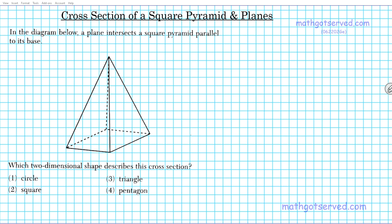The cross section is basically referring to the intersection between the pyramid and the plane. If you take a look at that intersection — the outline of the intersection — what kind of two-dimensional shape is formed?